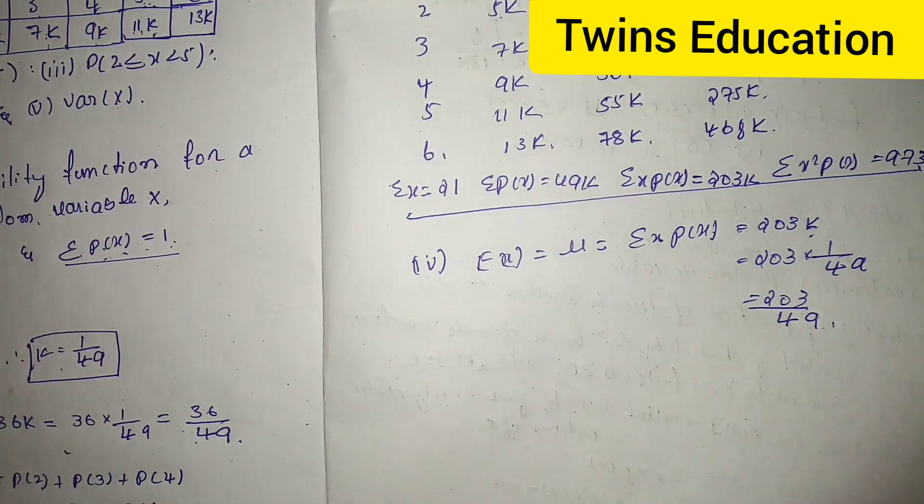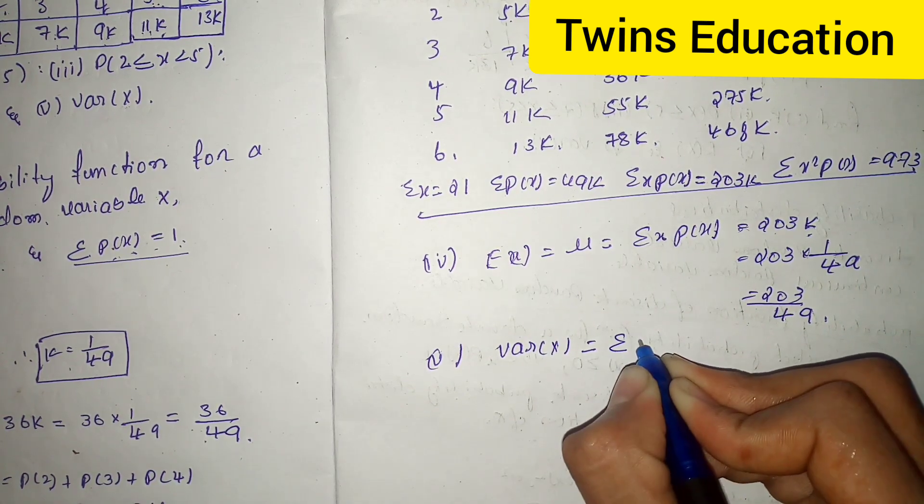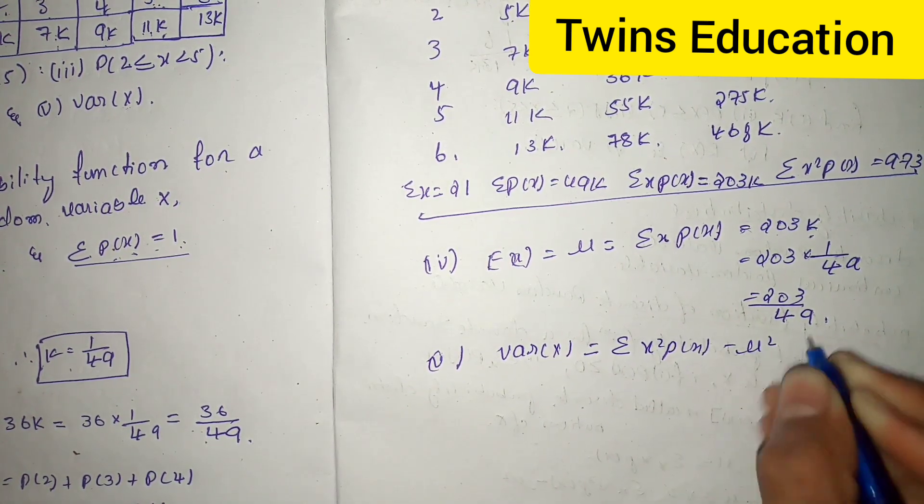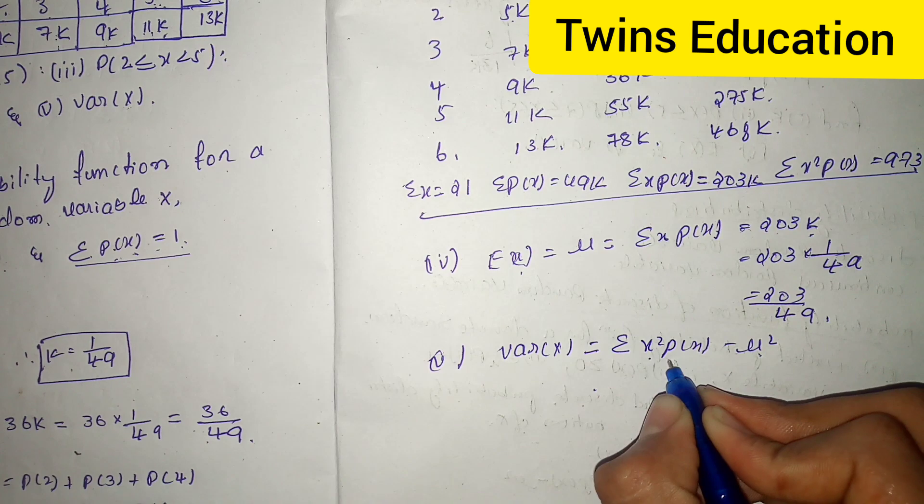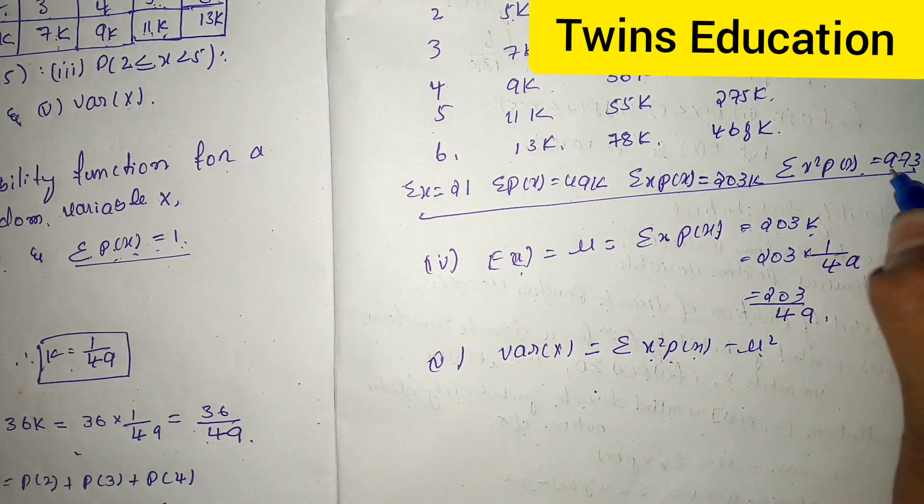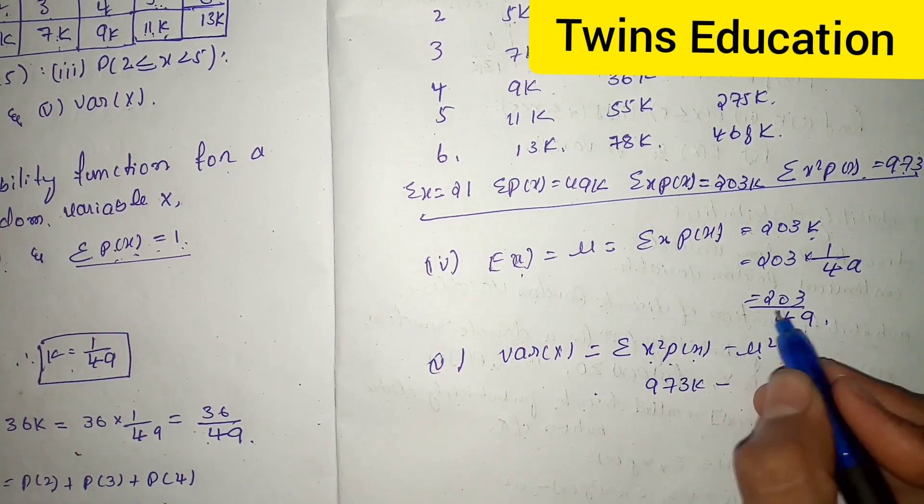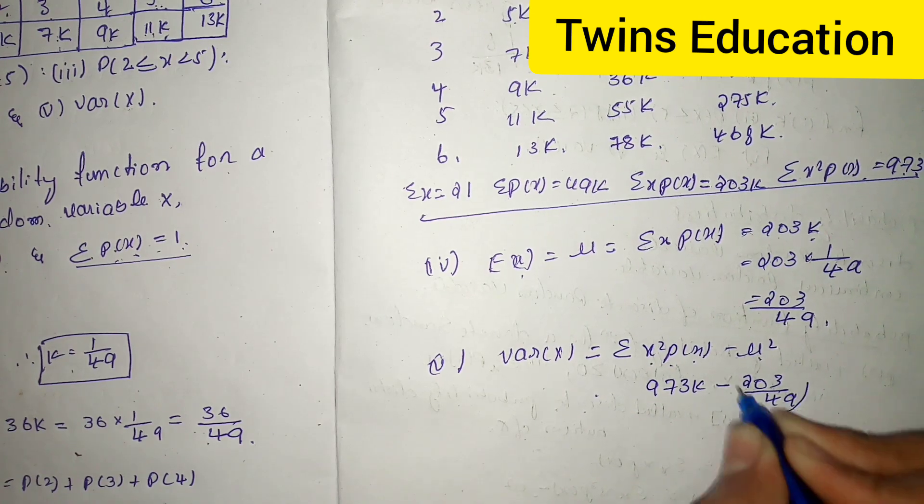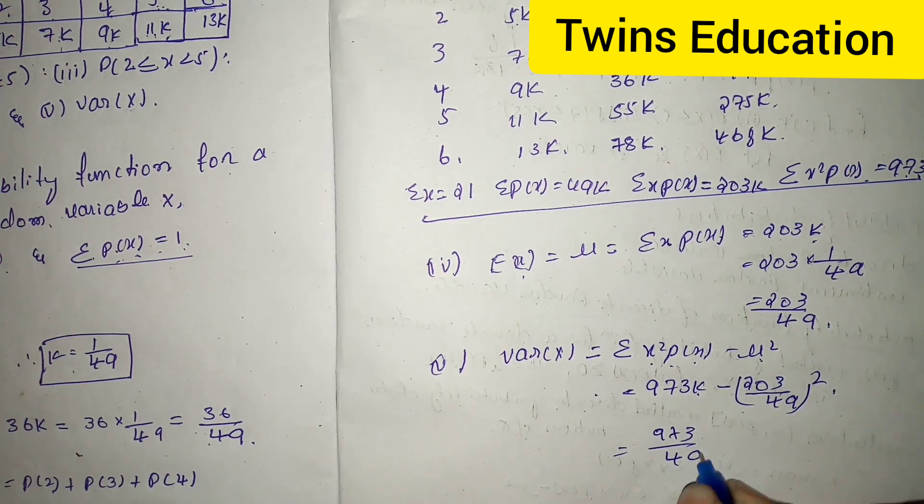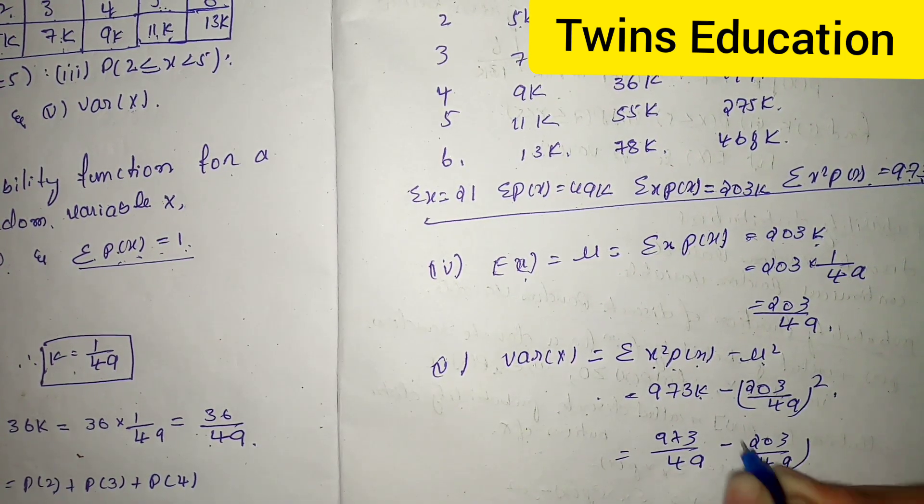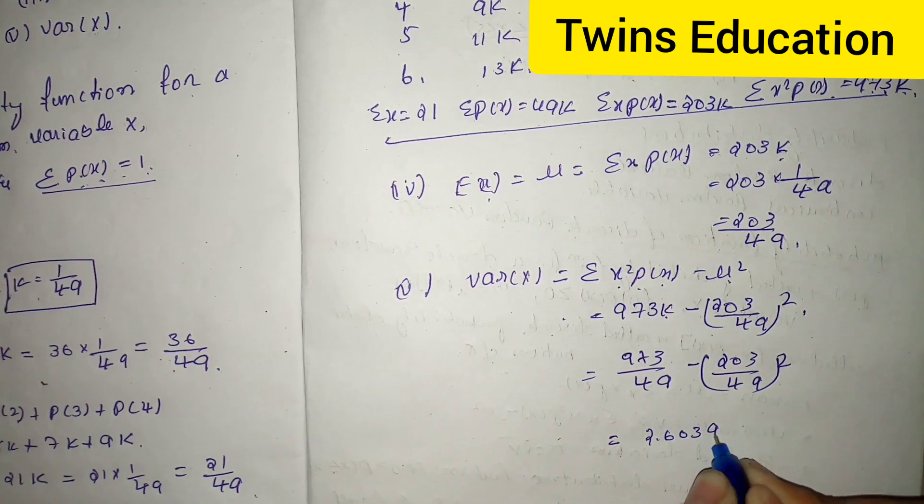Now I will find variance of x, which is equal to summation of x square p of x minus mu square. Mu is nothing but mean. Value of summation of x square p of x is 973k. Substitute 973k minus mu value 203 by 49 whole square. What is the value of k? 1 by 49. 973 by 49 minus 203 by 49 whole square, which is equal to 2.6039 is the final answer.